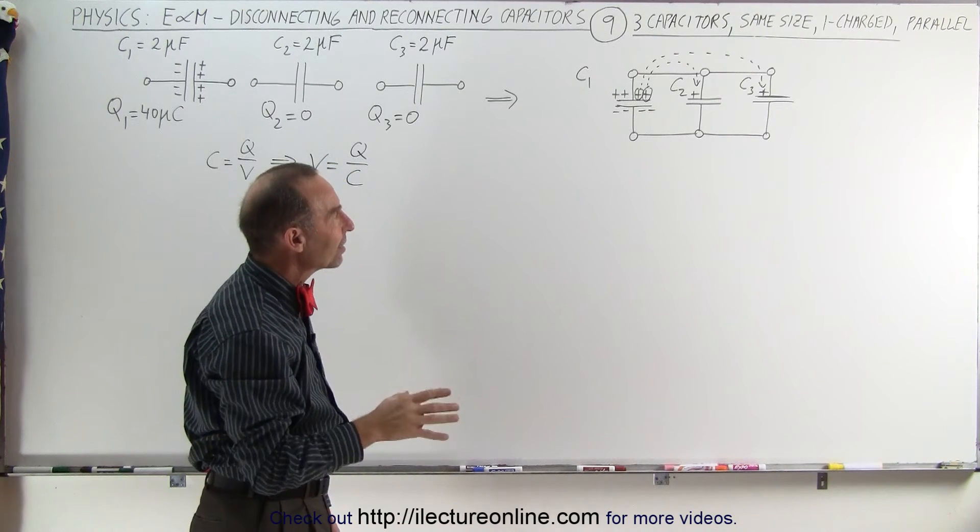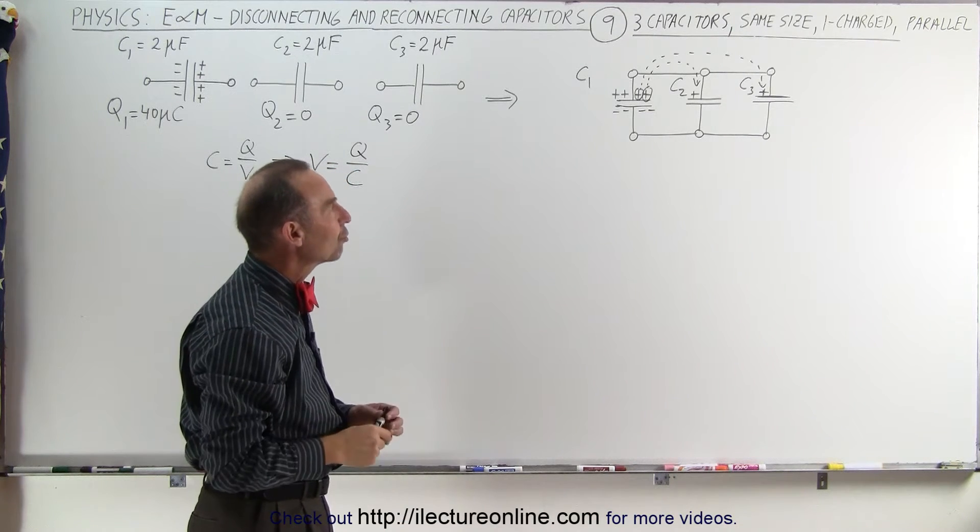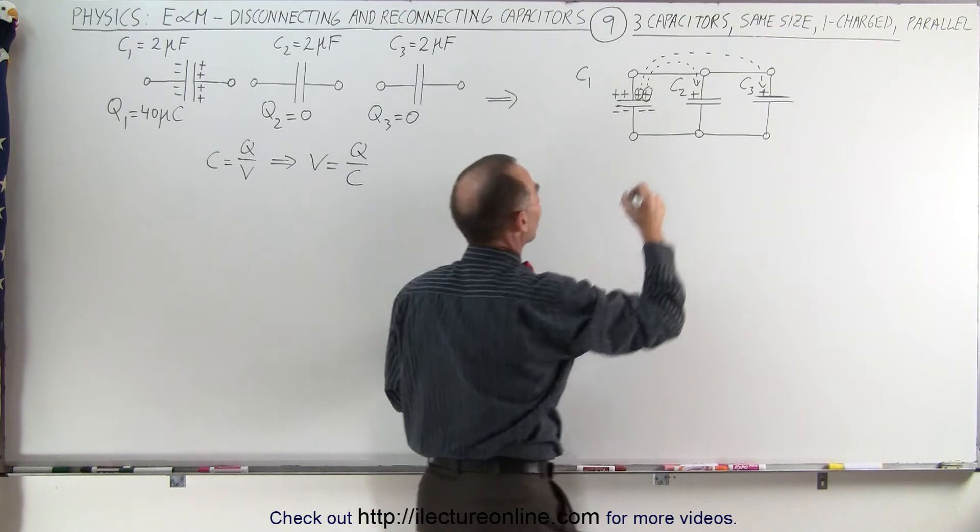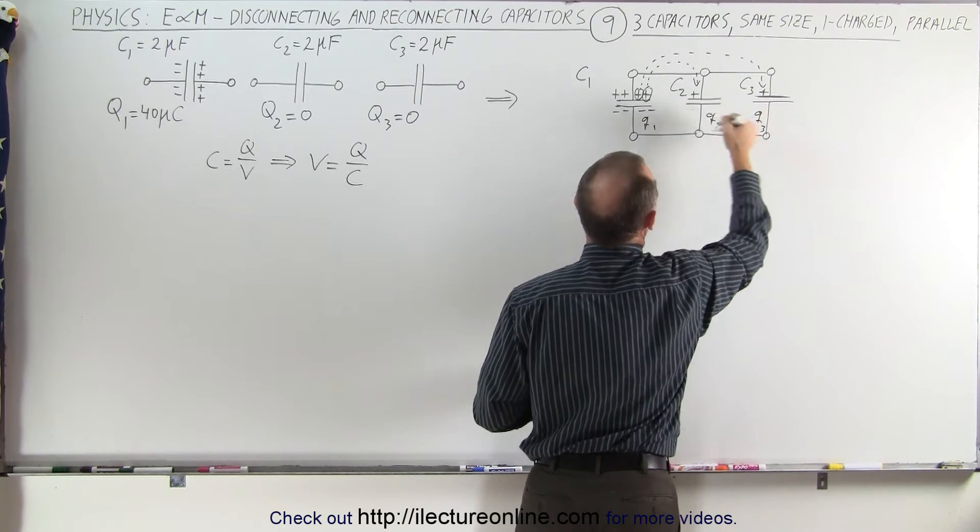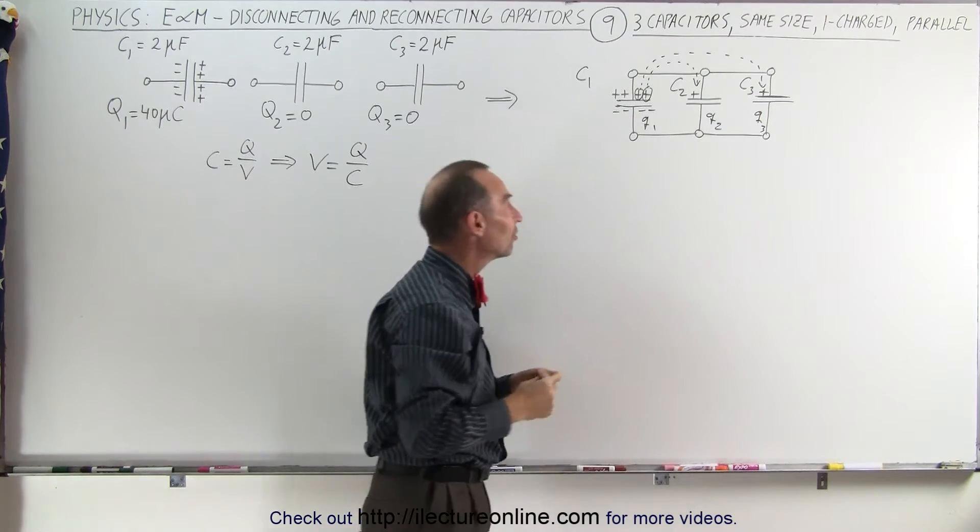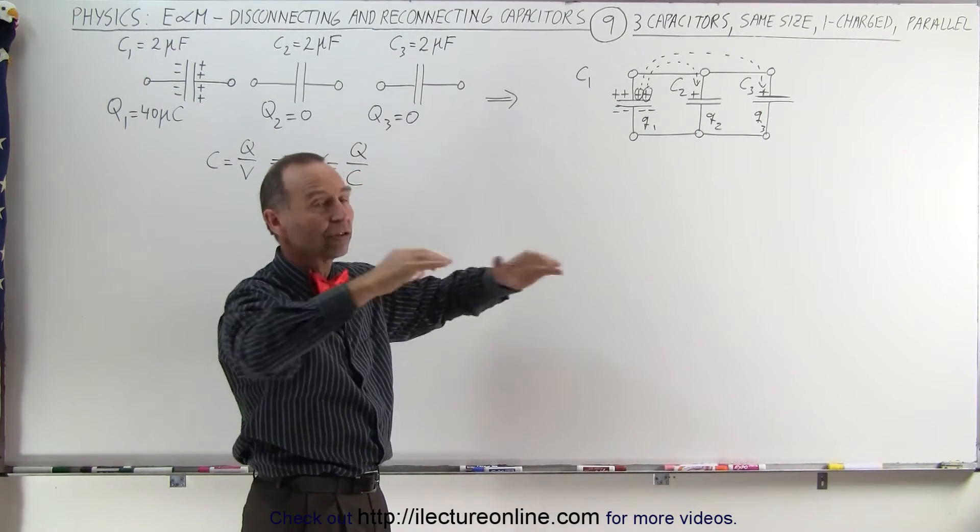Now, how do you find out what the final distribution of charge will be? We're looking for Q1, Q2, and Q3—the charge you end up with in the steady-state situation at the end when all the charges have moved around.